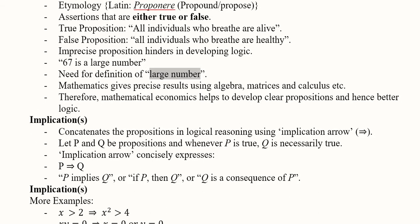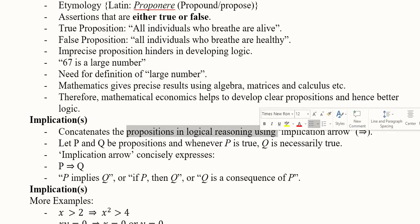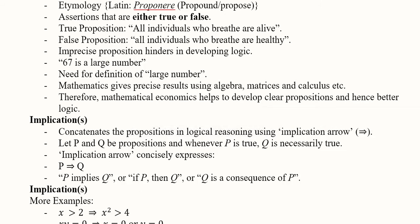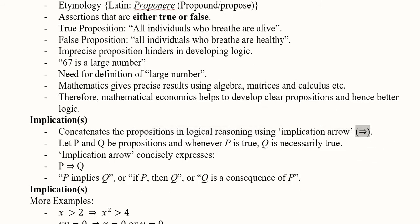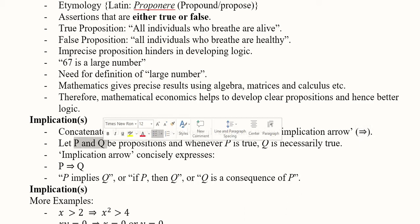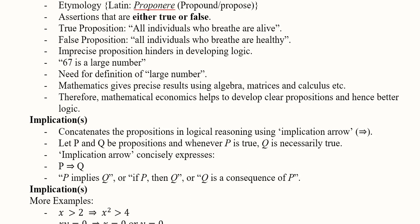The other part of logic is implications. Implications are basically the concatenation of propositions in a logical reasoning, and are represented with the help of an implication arrow. This can be better understood with a hypothetical example: assume that p and q are two propositions.